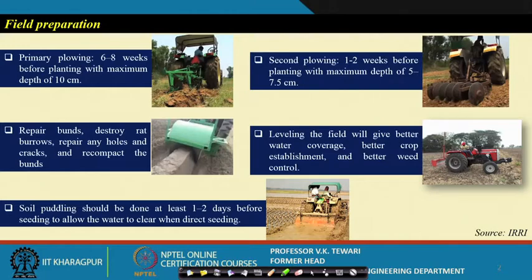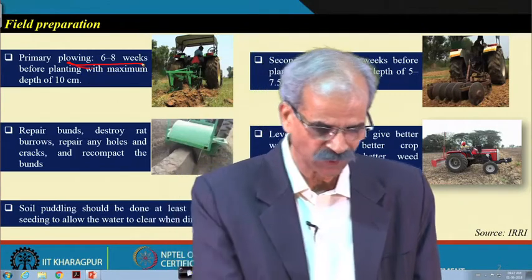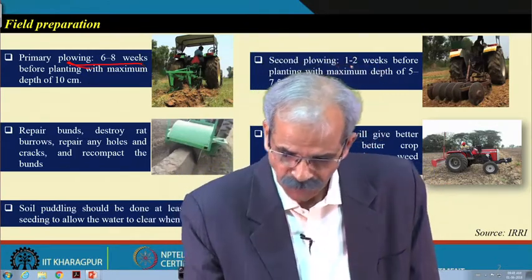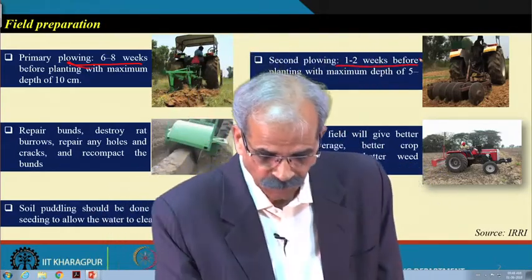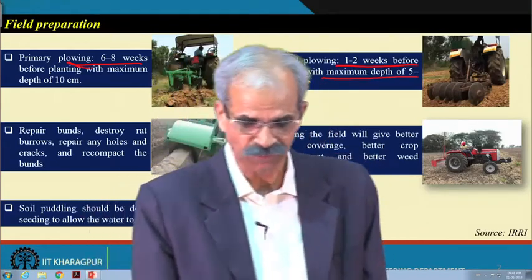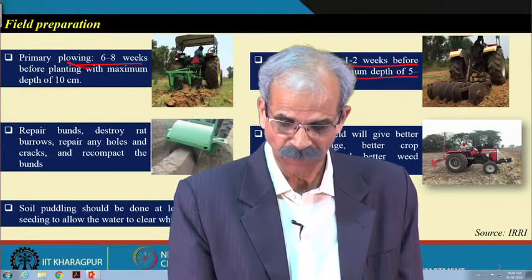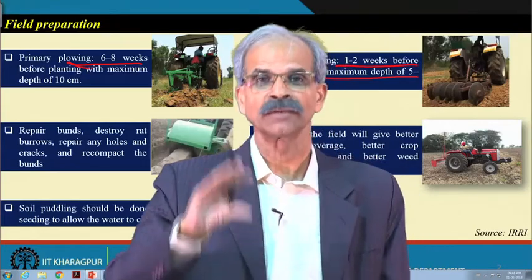Field preparation is very important when you want transplanting. Primary plowing is essential — no need to go into details — it should be done 6 to 8 weeks in advance. Secondary plowing should be done 1 to 2 weeks before, because now it is nearer. You would like to do maximum planting with a maximum depth of 5 to 7.5 centimeters, and the soil must be well prepared.